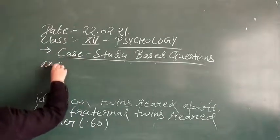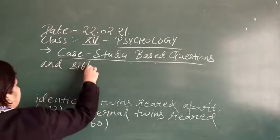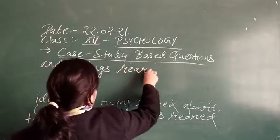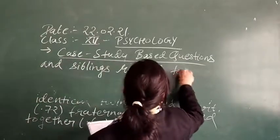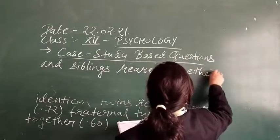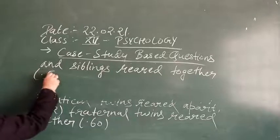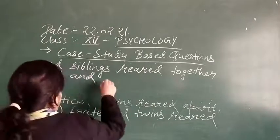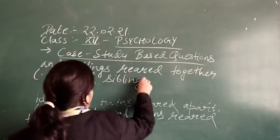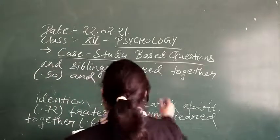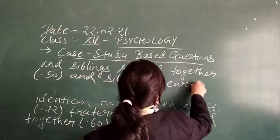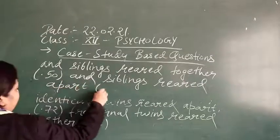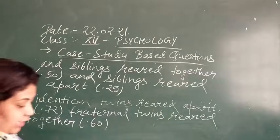Siblings reared together — 0.50; siblings reared apart — 0.25. This data shows the correlation between intelligence scores across different sibling and twin arrangements.